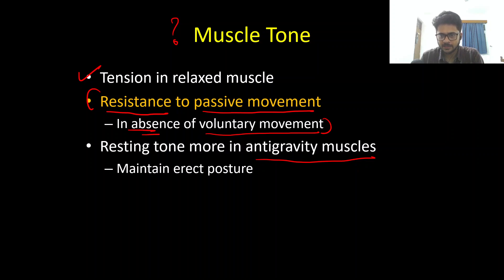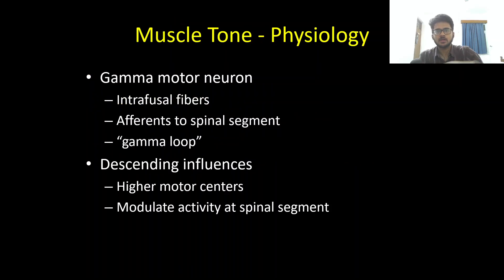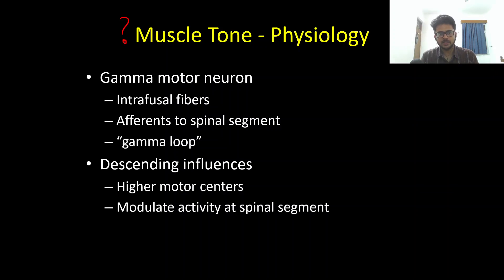Because the resting tone is more in the anti-gravity muscles, when we have disorders of hypertonia — that is, spasticity — this spasticity tends to involve or is more greatly appreciated in the anti-gravity muscles compared to the other groups.